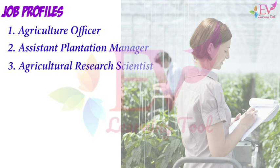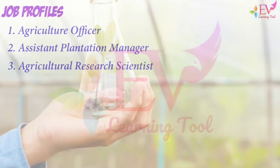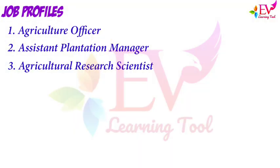3. Agricultural Research Scientist: Agricultural Research Scientists begin with doing research work, comprising both lab work and field work. They are mainly concerned with the biological processes of various things and their relations with products and processes. They also invent new methods to improve animal or soil health, nutrition, etc.